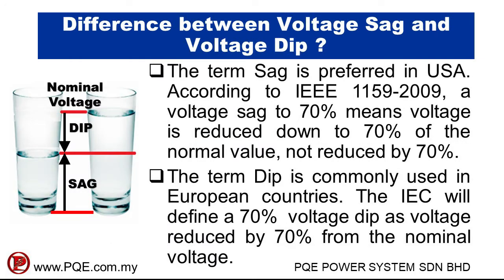The difference between voltage sag and voltage dip: the term 'sag' is preferred in the USA. According to IEEE 1159-2009, a voltage sag to 70% means voltage is reduced down to 70% of the nominal value, not reduced by 70%. The term 'voltage dip' is used in European countries, where IEC defines a 70% voltage dip as voltage reduced by 70% from the nominal voltage.